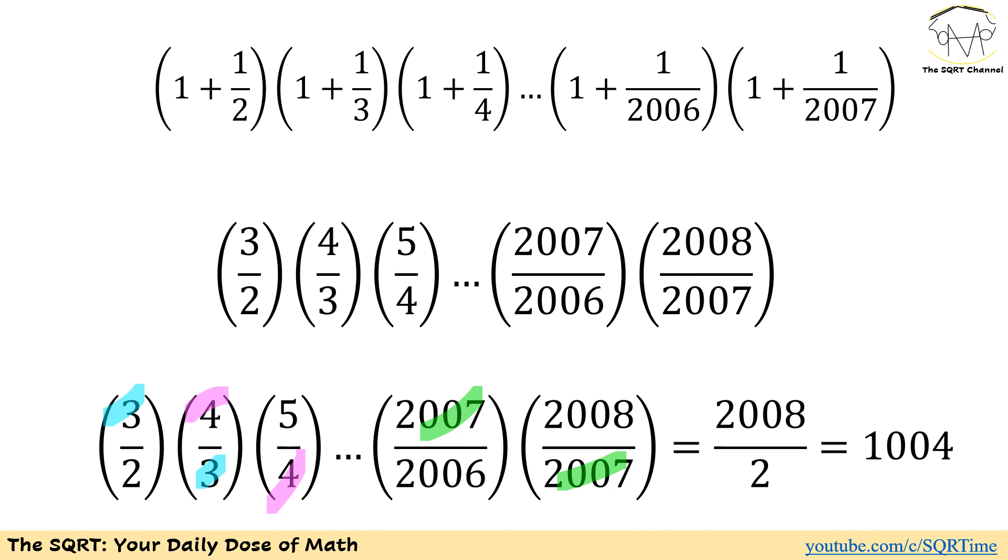As you can see, we can remove what we have with the denominator and numerator of the consecutive terms. For the first term we can remove 3 with the 3 that we have in the denominator of the second term. We can remove 4 in the second term with the denominator of the third term and so on so forth.